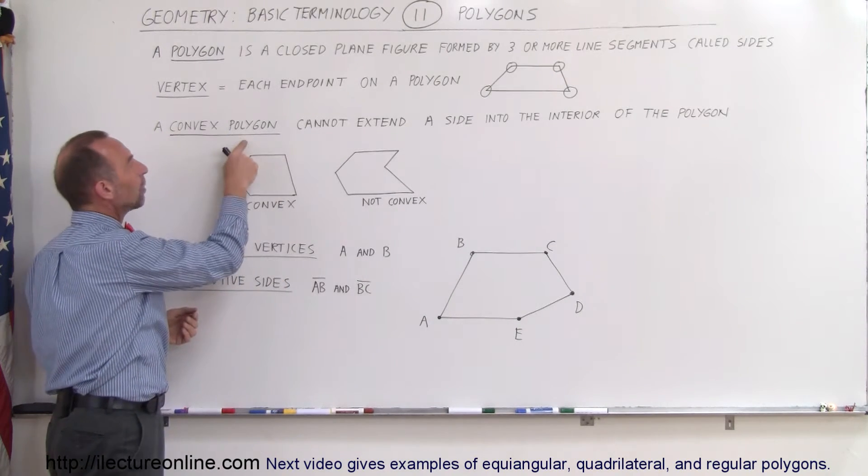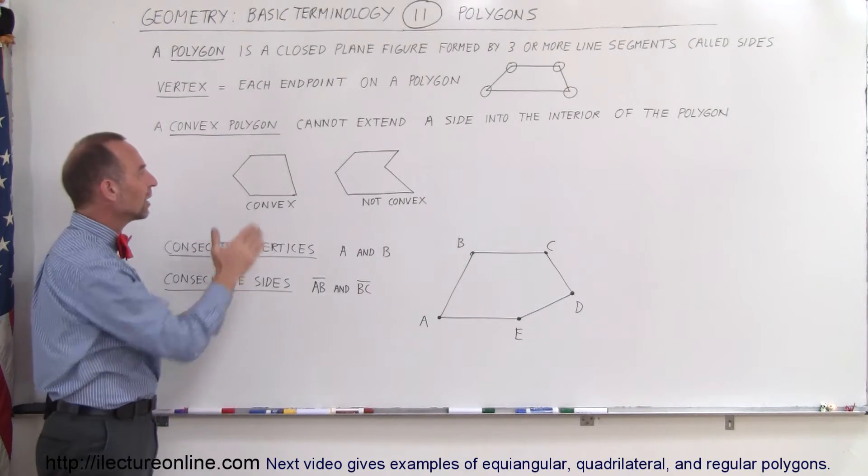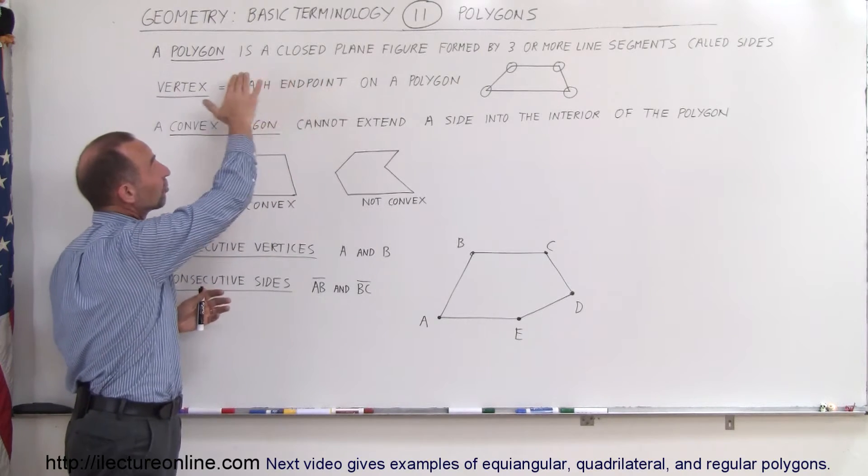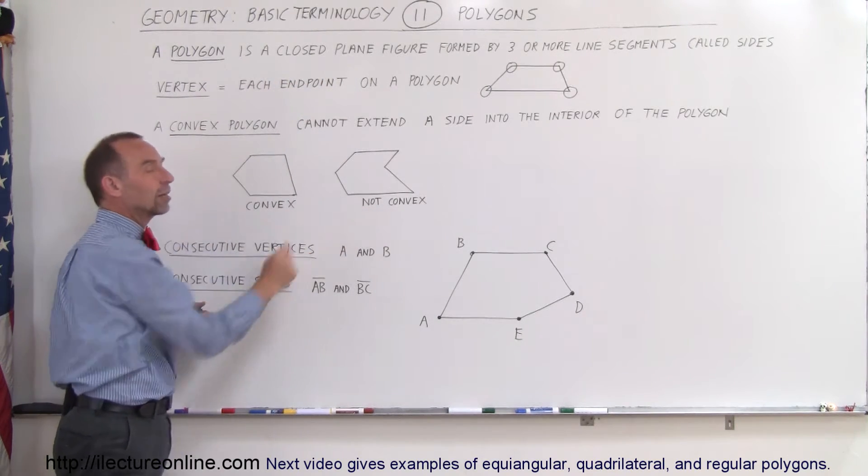A convex polygon cannot extend a side into the interior of the polygon. So what does that mean? Here we have two polygons. They both fulfill the requirement of the first definition right there, but this is a convex polygon, and this is not a convex polygon.